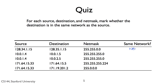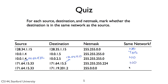The answer to the second row is yes — they are in the same network. If we take a bitwise AND of the two addresses with the net mask, we get 10.0.1.0 in both cases. The answer to the third row is no — they are not in the same network because they differ in their third octet. The source is in network 10.0.1.0, and the destination is in network 10.0.2.0. The answer to the fourth row is no — they are not in the same network; ANDed with the net mask, the source address is 171.64.15.32, while the destination is 171.64.15.0. The answer to the final row is yes — they match in the first byte; both are 171.0.0.0 when ANDed with the net mask.